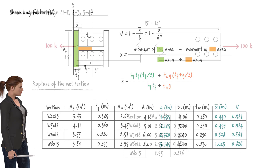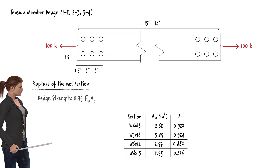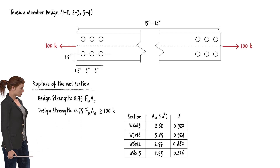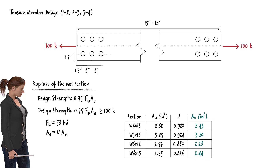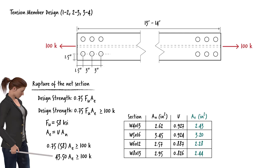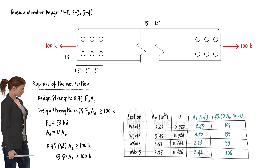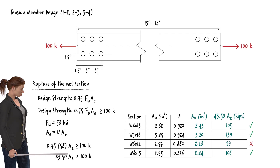Back to the rupture limit state: the strength of the member against rupture of the net section must be greater than or equal to 100 kips. With Fu equal to 58 ksi and Ae equal to U times An, we find that 43.5 times Ae must be greater than or equal to 100 kips. Three out of four standard sections satisfy this strength equation; one section is not strong enough to carry the factored load and is eliminated from further consideration.